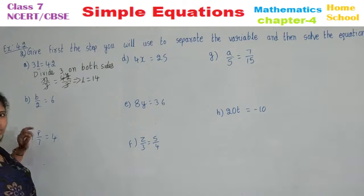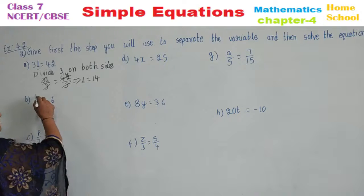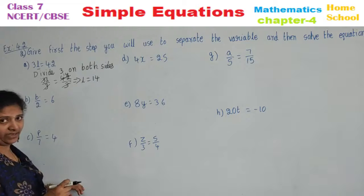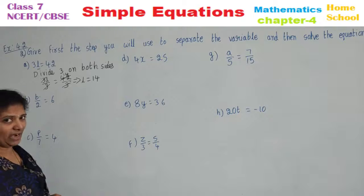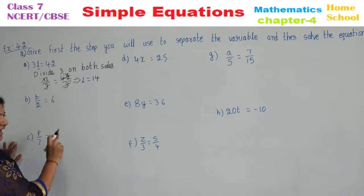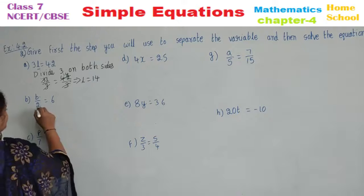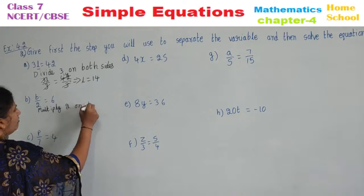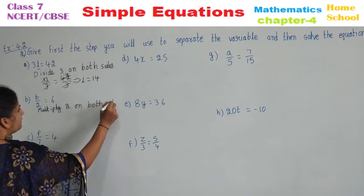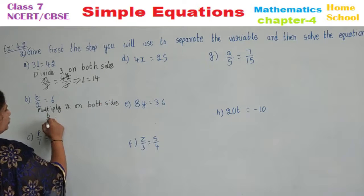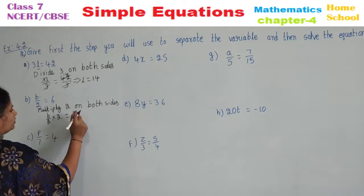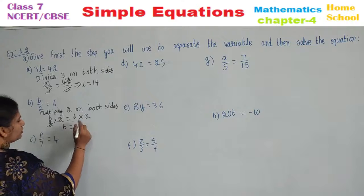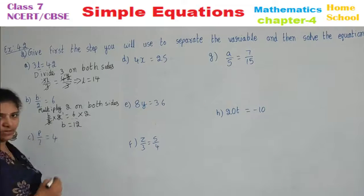Sub-question b: B divided by 2 equals 6. The variable is B, and the number 2 is dividing it. Division's opposite is multiplication, so multiply by 2 on both sides. B divided by 2, multiplied by 2, equals 6 multiplied by 2; the 2s cancel, giving B equals 12.